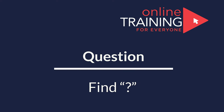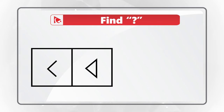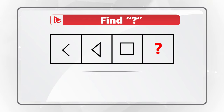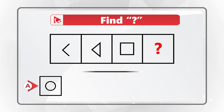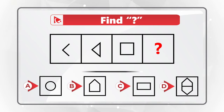Here is a wonderful question to test your analytical skills. You are presented with a series of shapes in boxes. The first box has an arrow pointing left. The second box has a triangle pointing left. The third box has a square. Then comes the box with the missing shape. You have four different choices: A, B, C, and D. Do you see the answer?